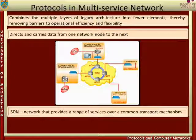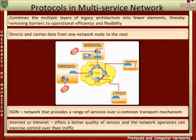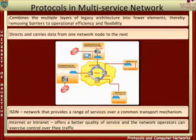This may mean that different services receive different treatment to ensure that certain assurances about quality are fulfilled. The internet may be regarded as another example of a multi-service network, although the quality of service may not meet users' requirements for some applications.